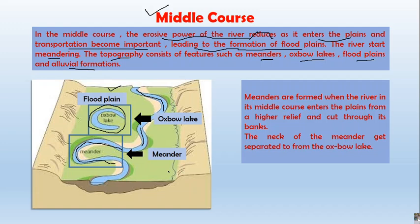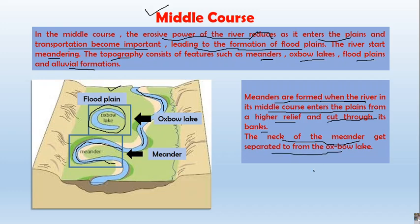A meander is defined as a curved path of the river in the middle course. Meanders are formed when the river in the middle course enters the plain and cuts through its bank. The neck of the meander eventually gets separated to form the oxbow lake.